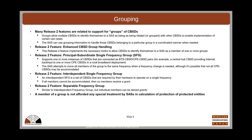A separable frequency group is similar to the interdependent frequency group, but if an individual member cannot change frequency or accept a particular power level, the others can still continue on — those individual CBSDs that can't use that frequency can be denied grants. It's important to remember that these groups have nothing to do with interference protection for protected entities. Being a group member gives no special consideration; it just allows a SAS to treat a group of CBSDs together to achieve the desired functionality.